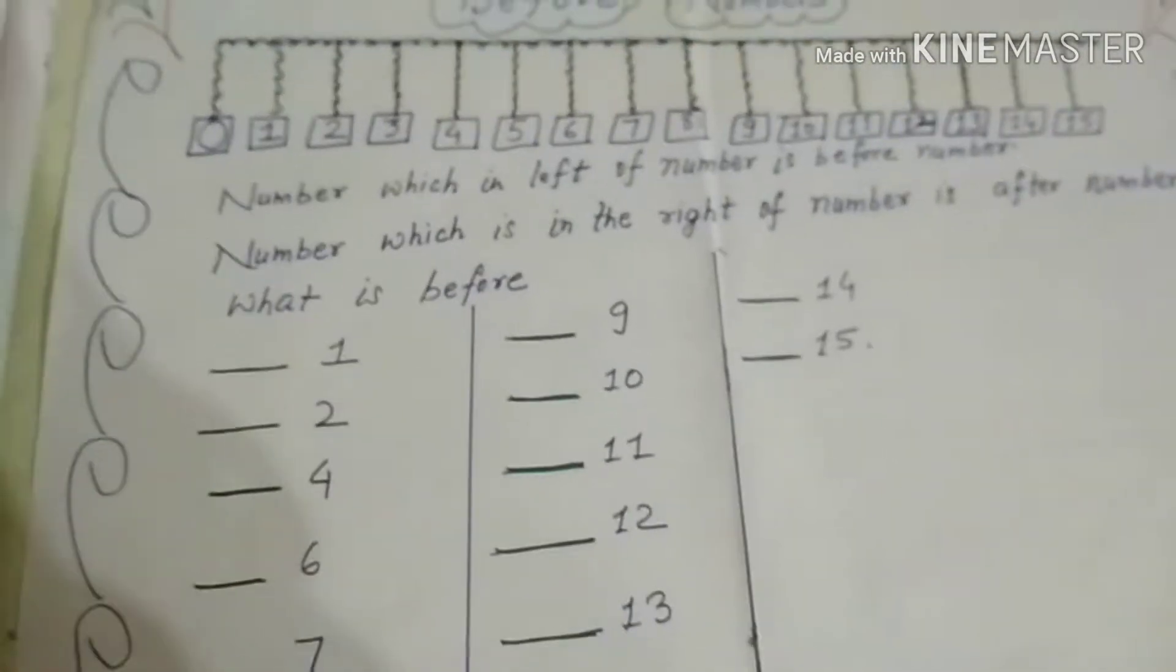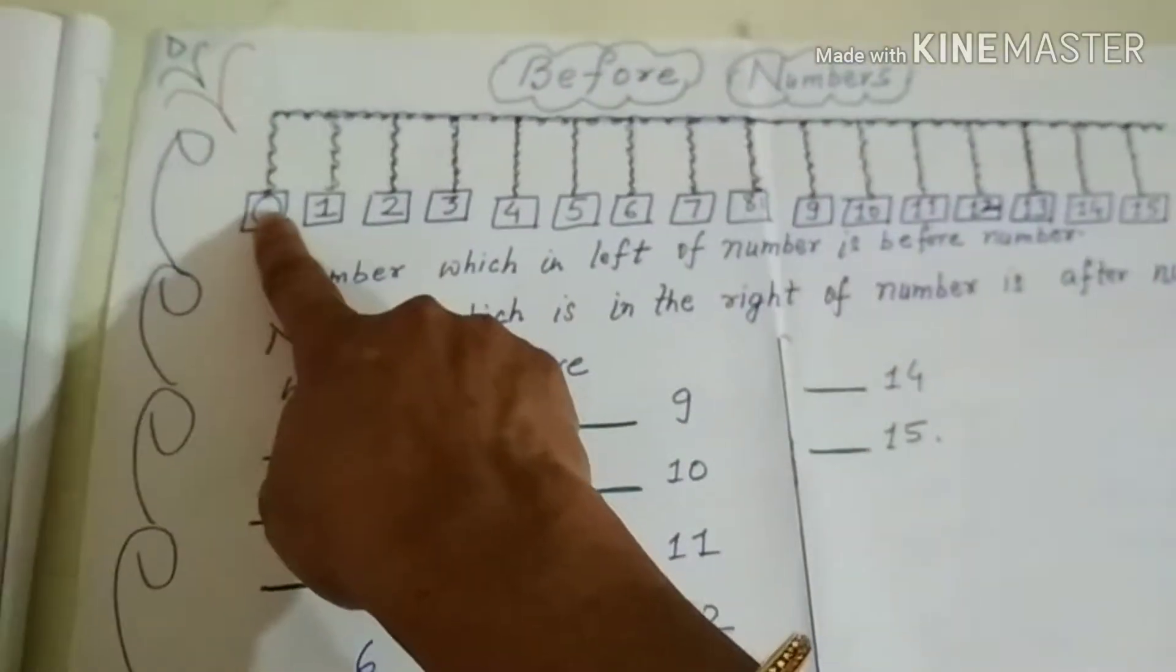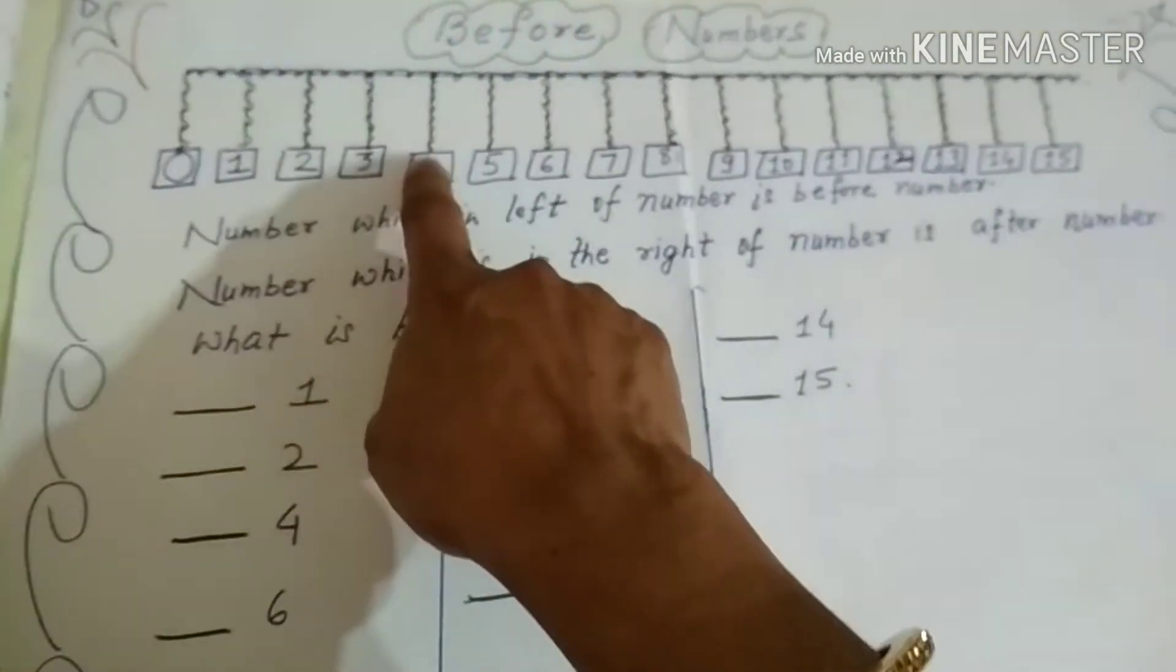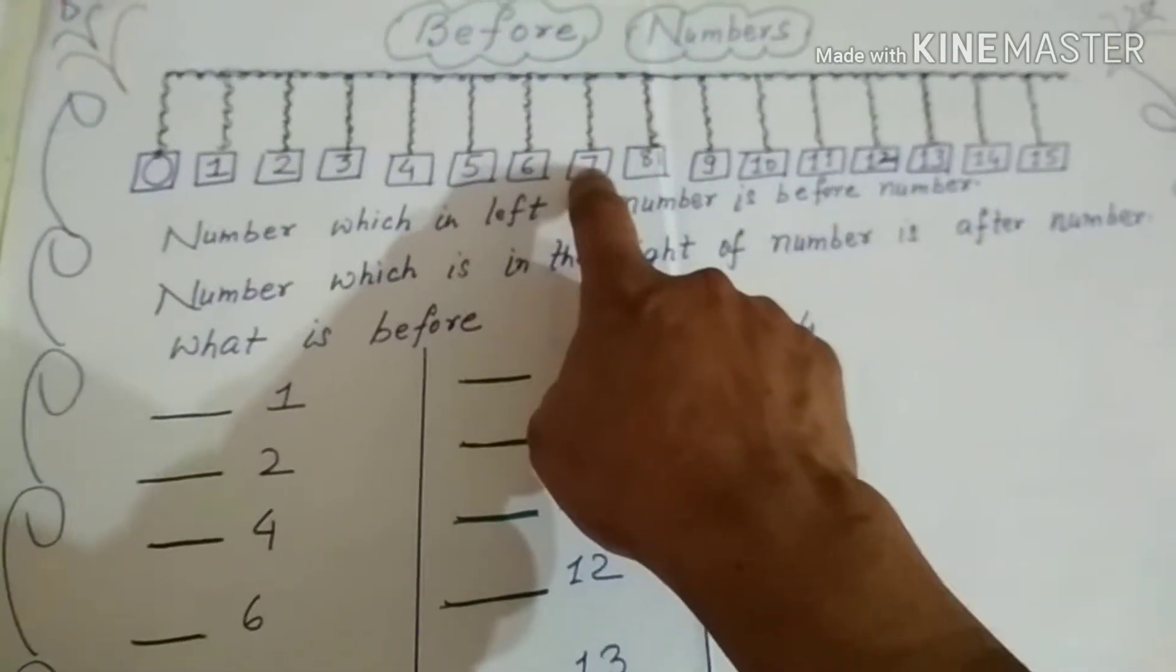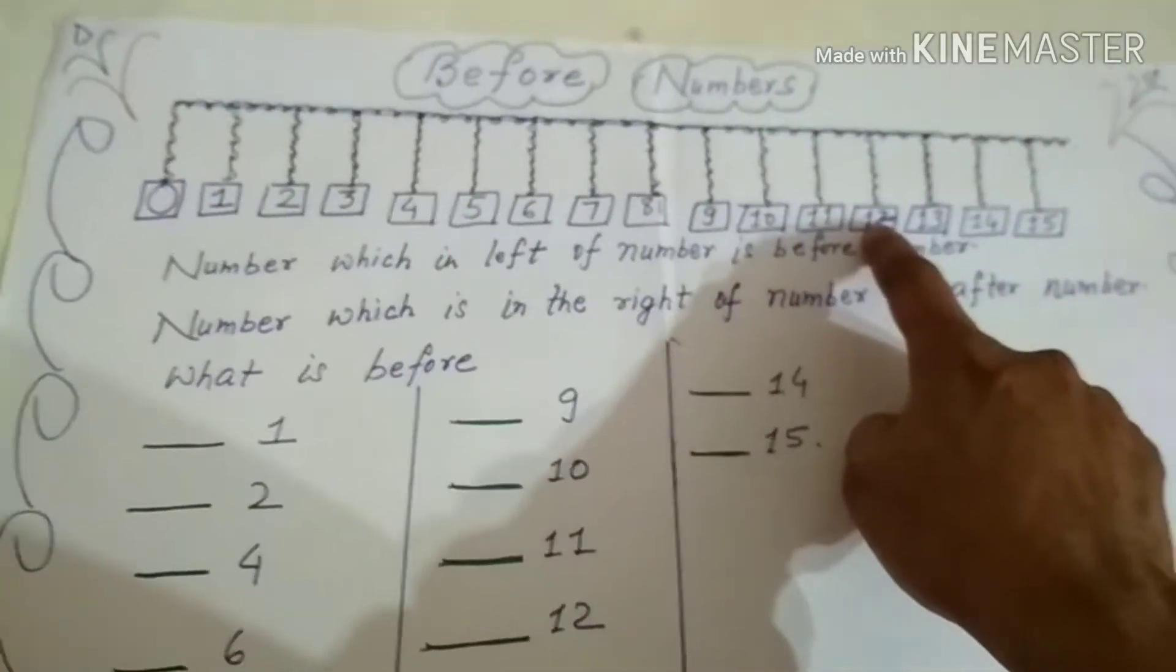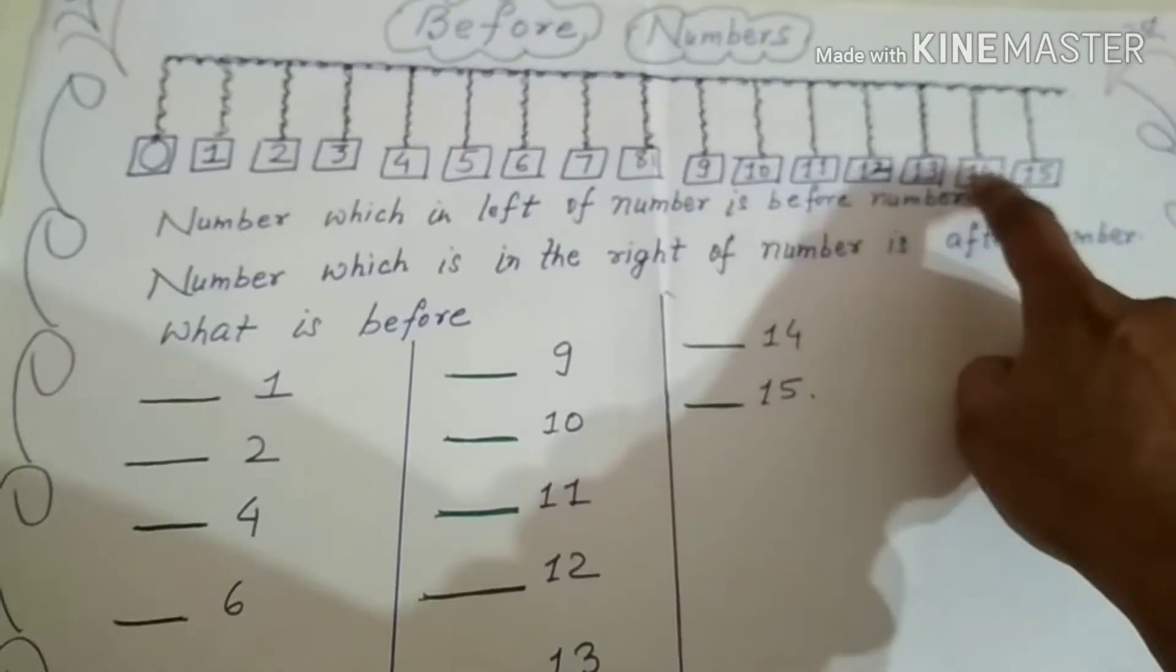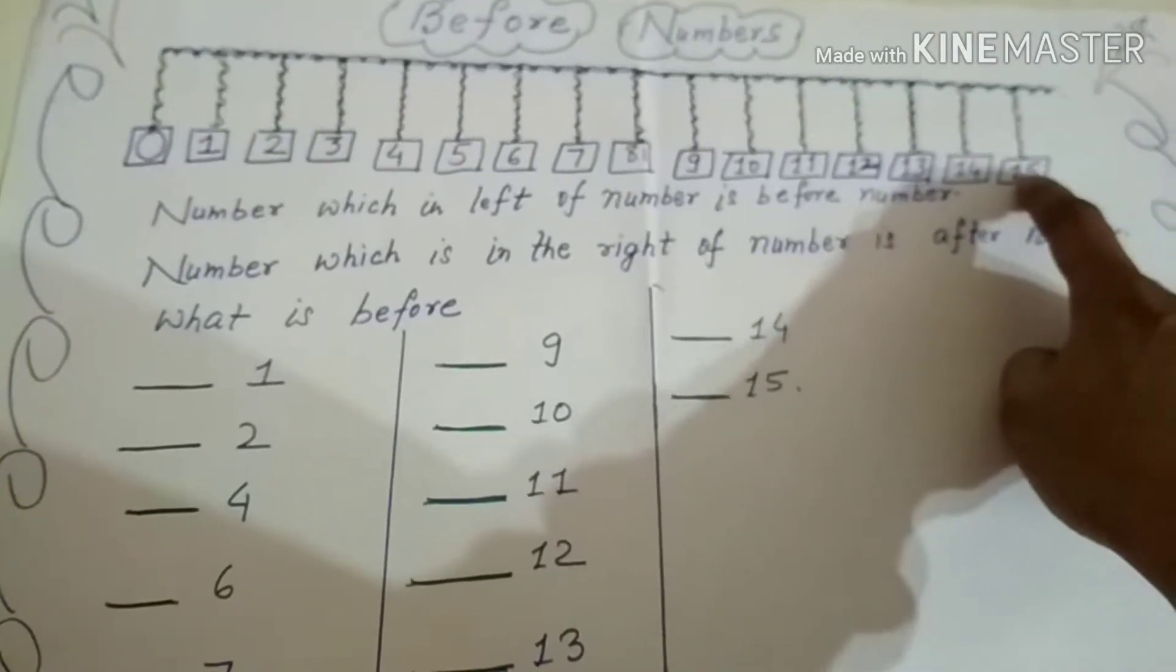First, repeat the numbers: 0, 1, 2, 3, 4, 5, 6, 7, 8, 9, 10, 11, 12, 13, 14, 15.